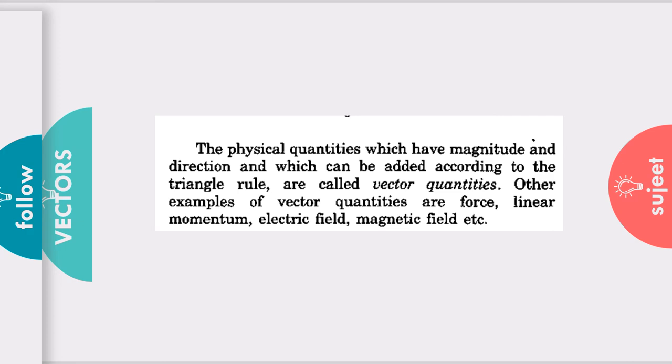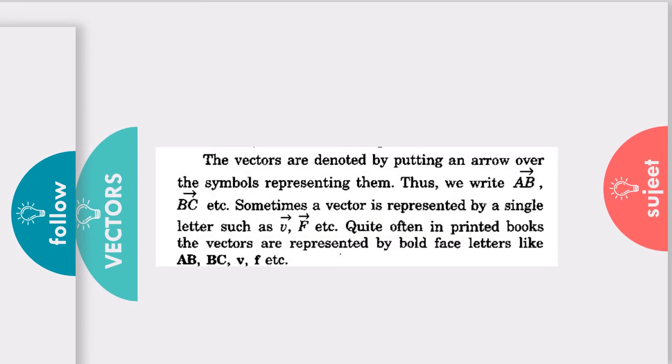Now, next move to the next slide. See, the vectors are denoted by, you know, an arrow. Even you can give the bold. As you can see in the last, we have emphasized the letter in the bold. Or you can give the arrow. This is the basic notation for the vectors.